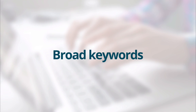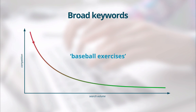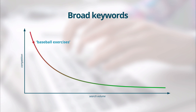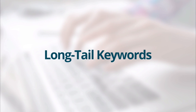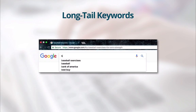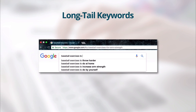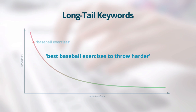First, we want to determine our broad keywords. A broad keyword can be seen as more of a category, like 'baseball exercises.' These terms will generally have a higher volume of searches associated with them, higher competition, and are not very descriptive of what the person searching is actually looking for. Then we have long-tail keywords, which more closely represent natural language that a person would use when typing into Google. Notice when we type 'baseball exercises' into Google, Google will make suggestions on what you may be looking for — this is what is most commonly being searched for by users.